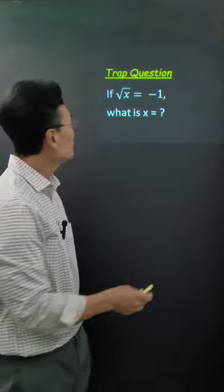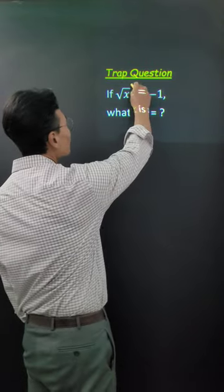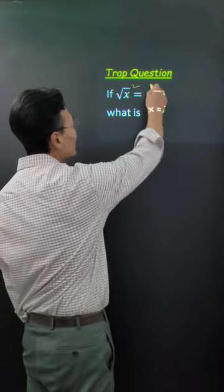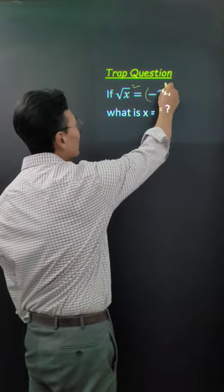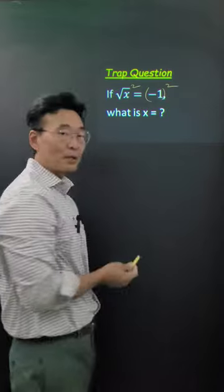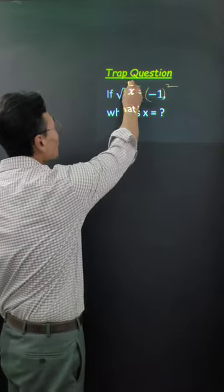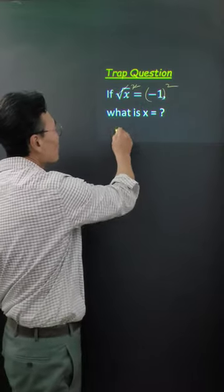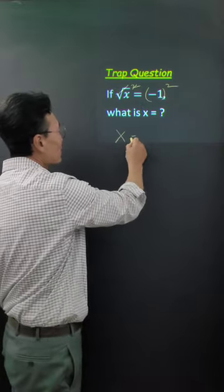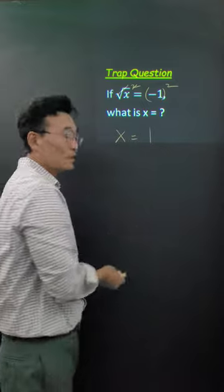To solve this equation, you want to go ahead and square the left side and square the right side. The square and square root will cancel out, and x equals 1.